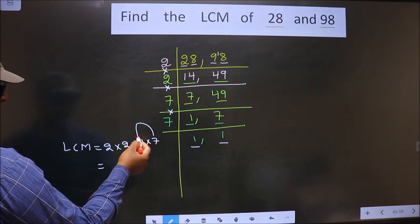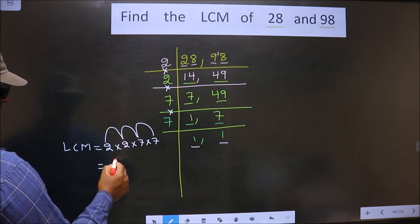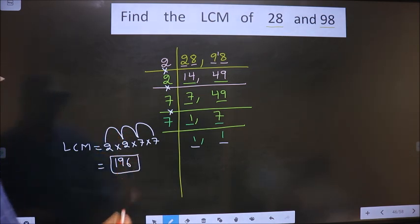7 times 7 is 49. 49 times 2 is 98. 98 times 2 is 196, which is our answer.